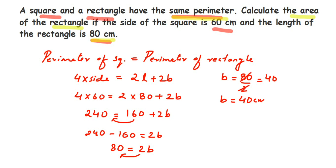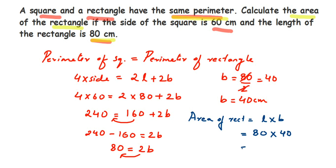Now we find the area of the rectangle. Area of rectangle = length × breadth = 80 × 40 = 3200 square centimeters. I hope this question is clear. If you have any other questions or doubts, you can write a comment. Thank you so much for watching.